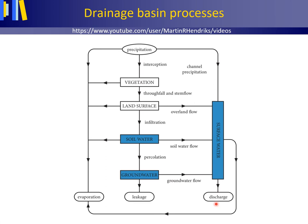Surface water can also evaporate. Additionally, there is precipitation that directly falls into the streams and rivers — this is called channel precipitation. Finally, there may be the process of leakage if the catchment is not well sealed at the bottom. This leakage water does not leave the catchment at the catchment outlet point.